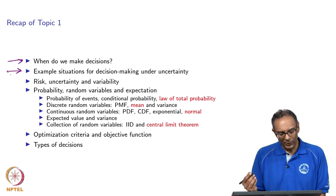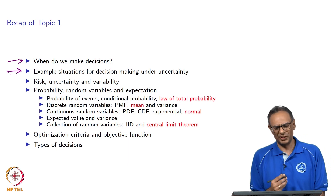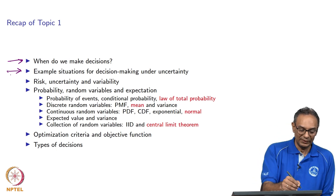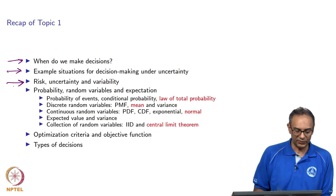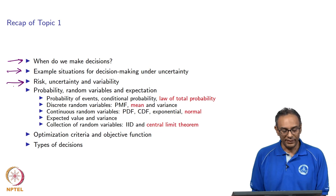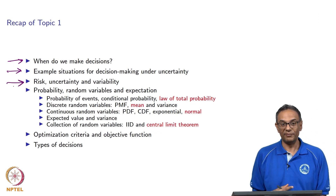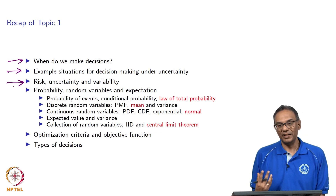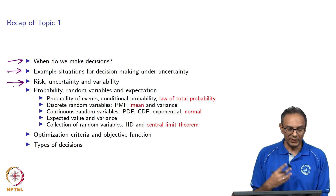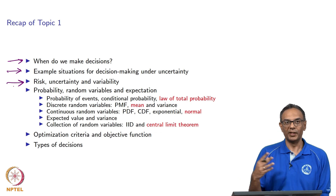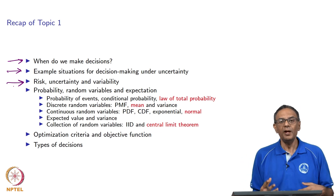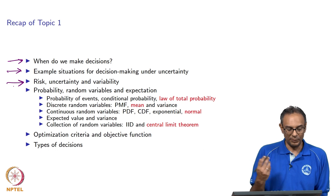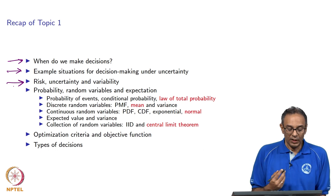After that, we went into a somewhat controversial area — not that people are fighting over it, but different people use different words for describing things. I just want to clarify: when I say uncertainty, what I essentially mean is that I do know some probabilistic information about what is going to happen in the future, based perhaps on historical data or some type of expert opinions.